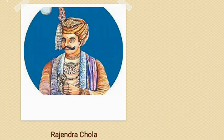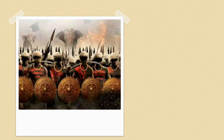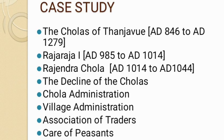Rajendra Chola was the son of the great Chola king Raja Raja of Southern India. He succeeded his father as Chola king in AD 1014. He built a bigger and stronger navy and won victories over South East Asia, Malaya, Java, and Sumatra. He also defeated the Pala king Mahipala of Bengal. To commemorate his victories, he built a new capital named Gangaikonda Cholapuram. Rajendra Chola also built lakes and canals so that farmers might always have water for their fields.